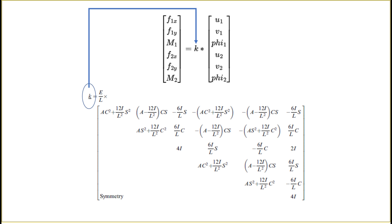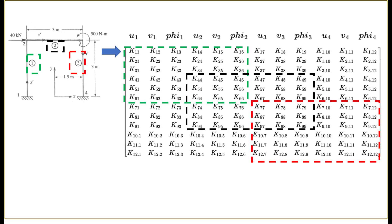The terms in the force-moment column vector correlate directly to the terms in the displacement vector. For example, the force acting in the x direction on node 1 is denoted as F1x, and the corresponding displacement term is U1. The same applies to the moment and angle of deflection, phi. The next step is to create the global stiffness matrix for the frame elements.